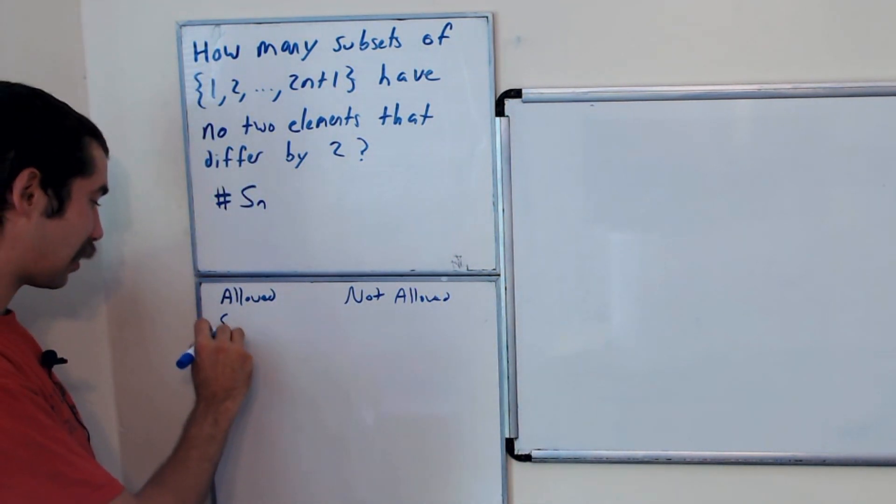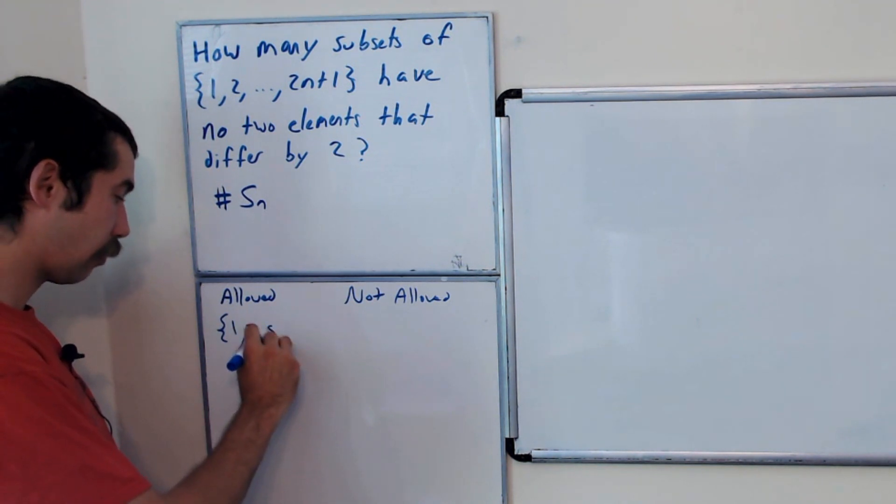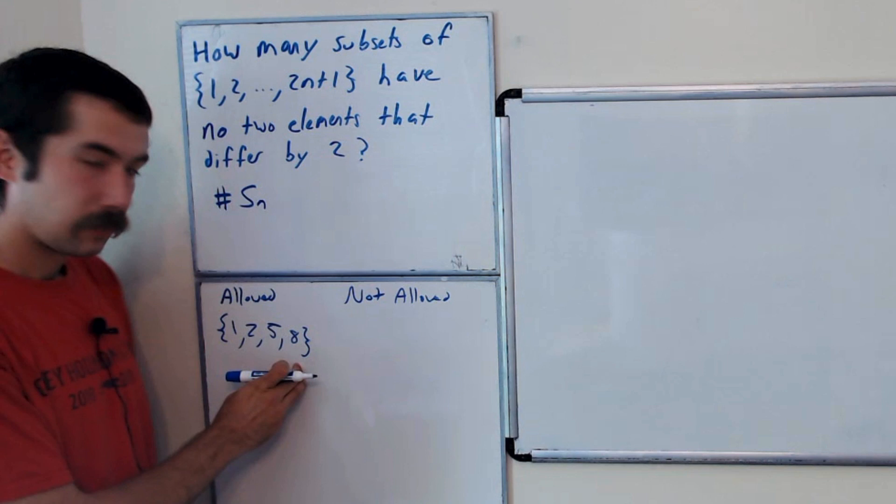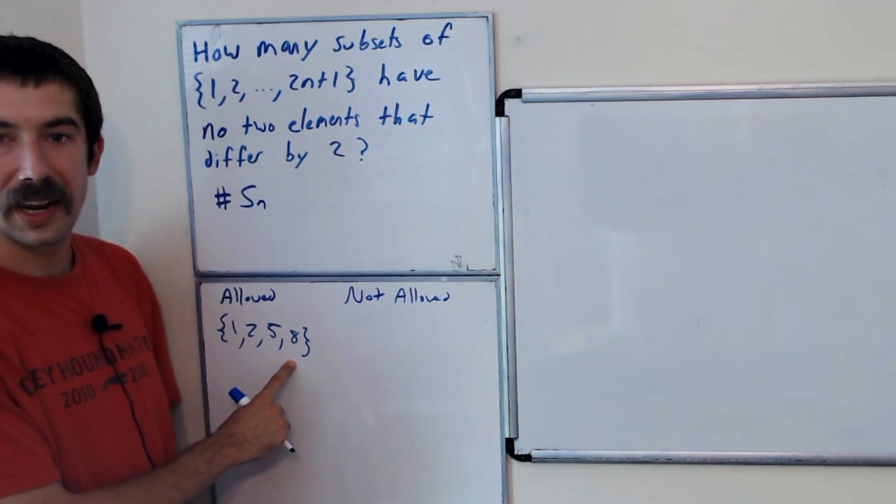So an example of a set that's allowed would be like 1, 2, 5, 8. Right, no two elements in this set differ by exactly 2.